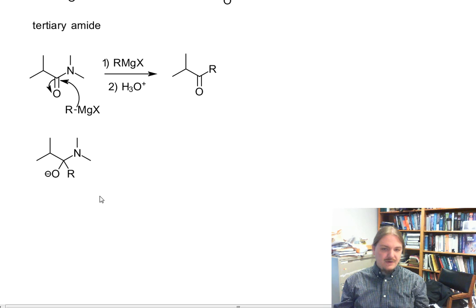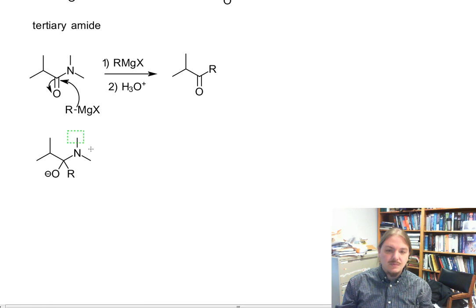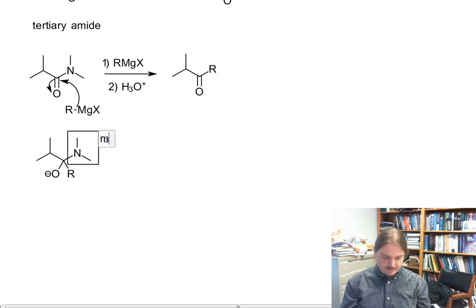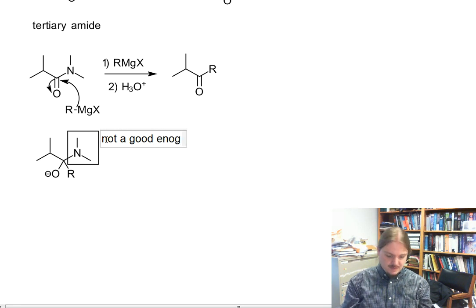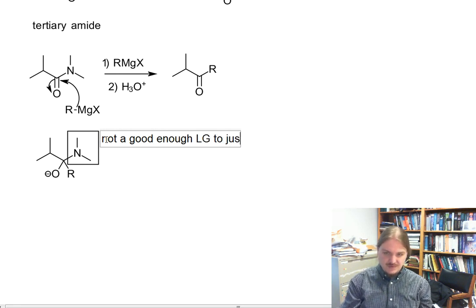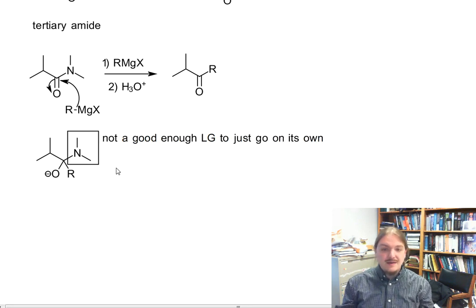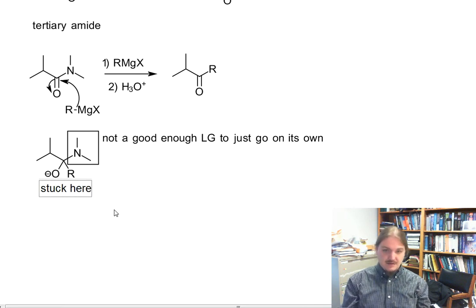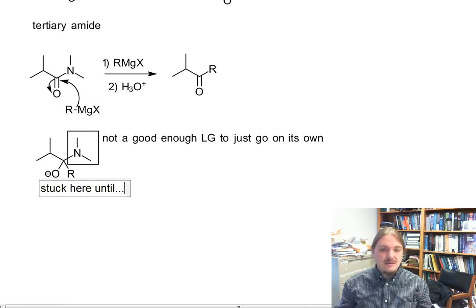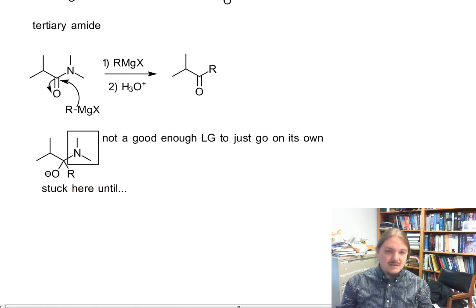But unlike every other Grignard type reaction before, the amine part here is not a good enough leaving group to just go on its own. Or even if it does, it's a good nucleophile and it's going to come back. So this intermediate here is stuck until we neutralize the reaction with acid.